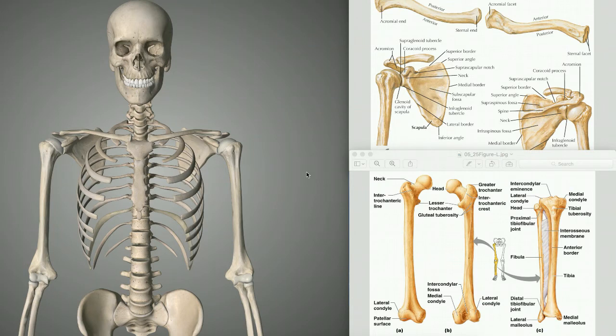Hello, so this is the third series of the tutorial that I'm posting to you with the anatomy of the human body. So if you've seen my previous ones, I've done the anatomy of the skull and then I've done the anatomy of the vertebral column. And today what I'm hoping to go through is the anatomy of the upper limb.